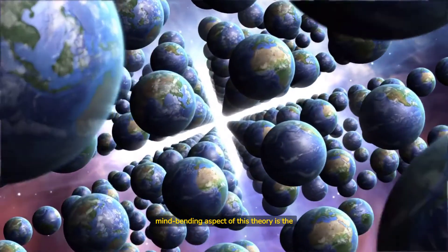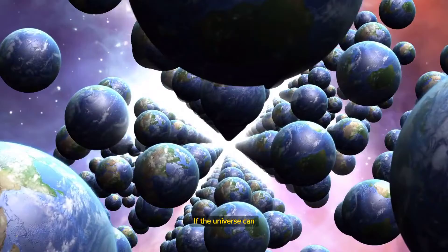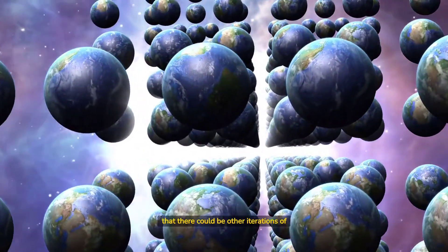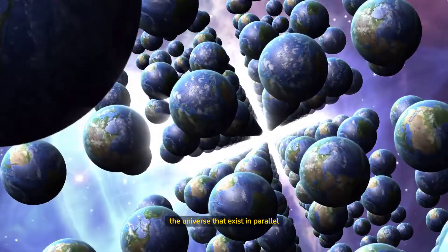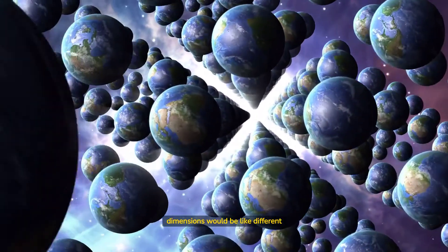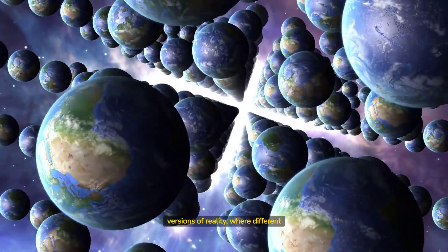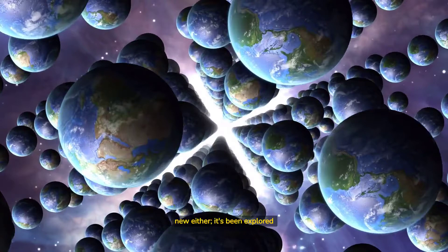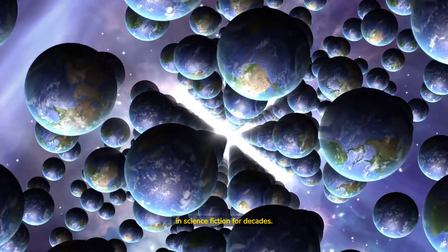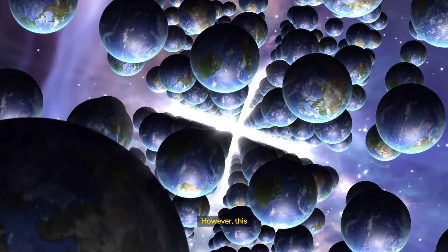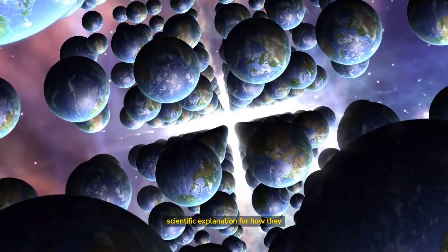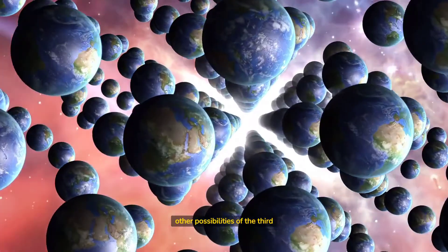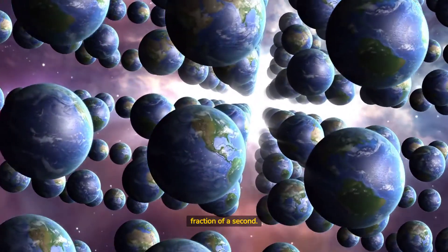But perhaps the most mind-bending aspect of this theory is the idea of parallel dimensions. If the universe can simulate itself into existence, then it stands to reason that there could be other iterations of the universe that exist in parallel dimensions. These dimensions would be like different versions of reality, where different possibilities of the third dimension exist. The concept of parallel dimensions is not new either, it's been explored in science fiction for decades. However, this theory provides a new, scientific explanation for how they could exist. These parallel dimensions could be the result of other possibilities of the third dimension that lasted longer than a fraction of a second.